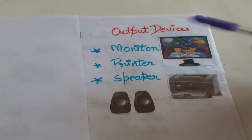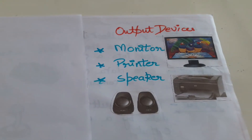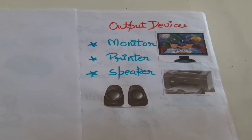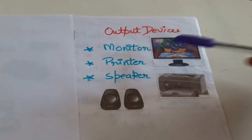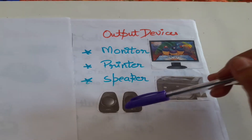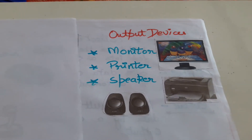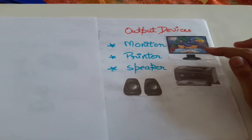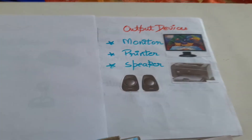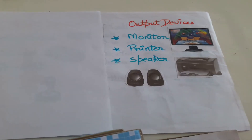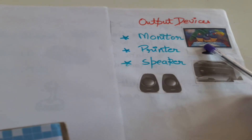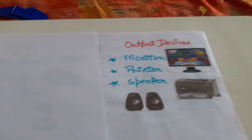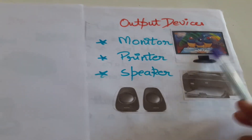These are some output devices. Can you see children? These are output devices — monitor, printer, speaker. These are output devices. These are where we can display the result. What does monitor do? Monitor shows the work done by us. It shows the screen, it shows the typed text — whatever text we type, it shows the typed text.